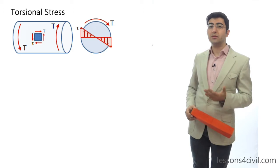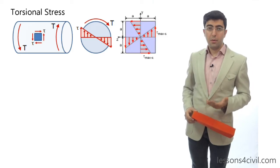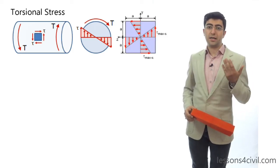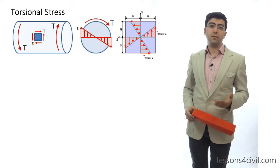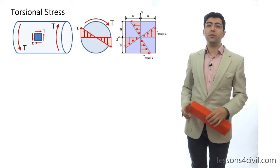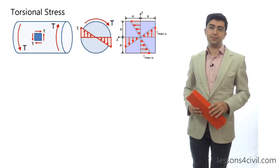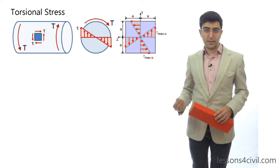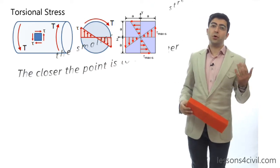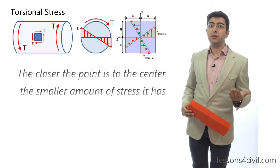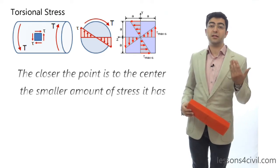In this case, I talked about a circular cross-section. But as you know, we have other cross-sections too. For example, we have wide flange or rectangle cross-sections. The fact is the same for all of these cross-sections. The closer the point is to the center, the smaller amount of torsional stress it will experience.